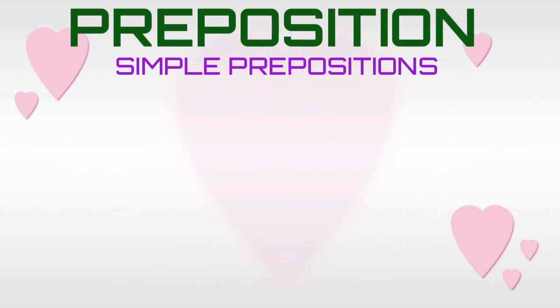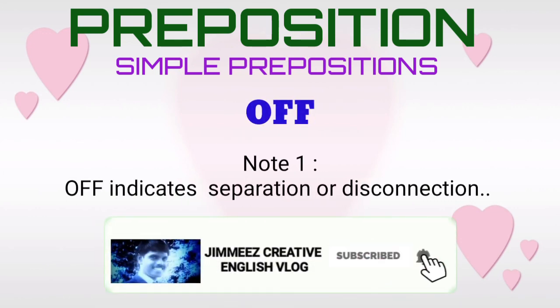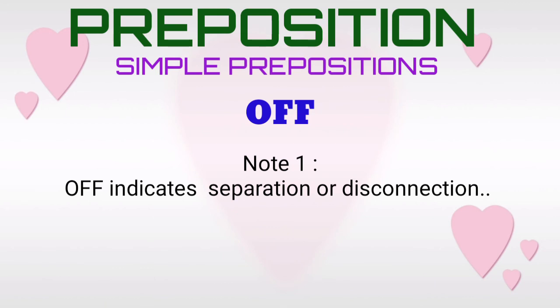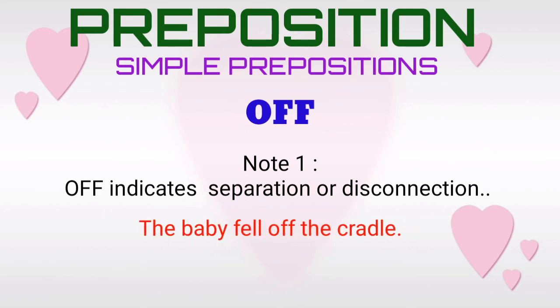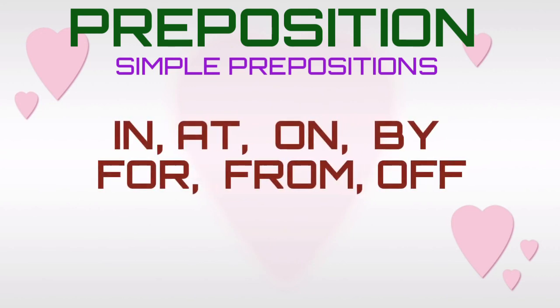Simple preposition 'off', note one. The simple preposition 'off' indicates separation or disconnection. For example: 'The baby fell off the cradle.' 'He took off his hat.' Here the simple preposition 'off' indicates separation or disconnection. We have learned prepositions and a few simple prepositions — namely 'in', 'at', 'on', 'by', 'for', 'from', 'off' — and their usages.